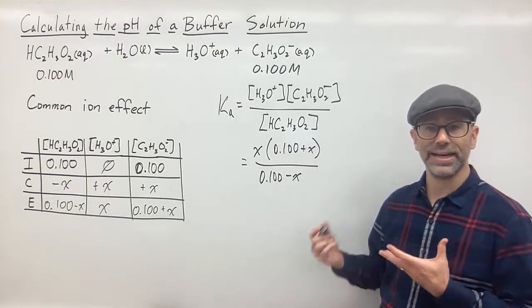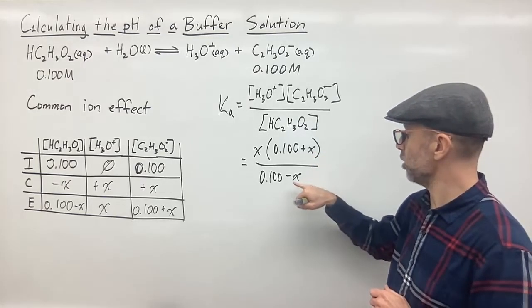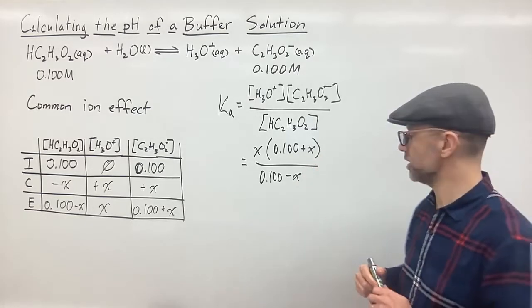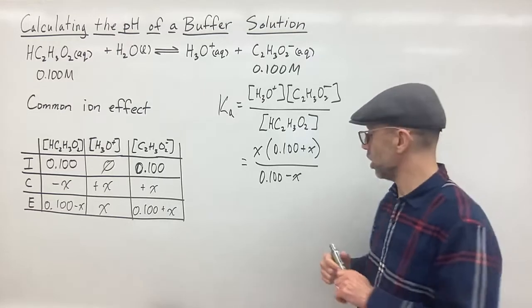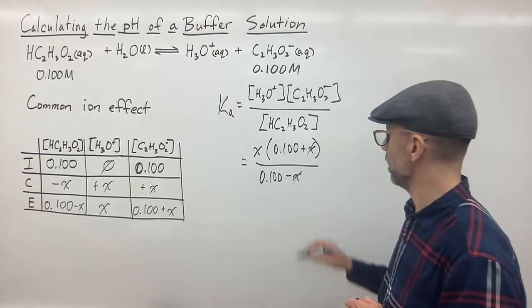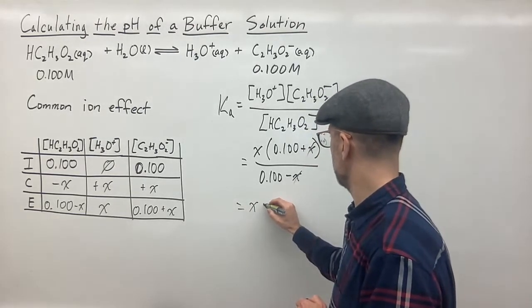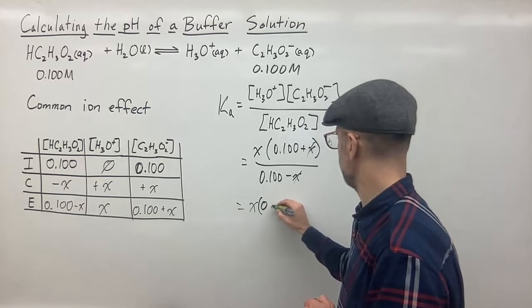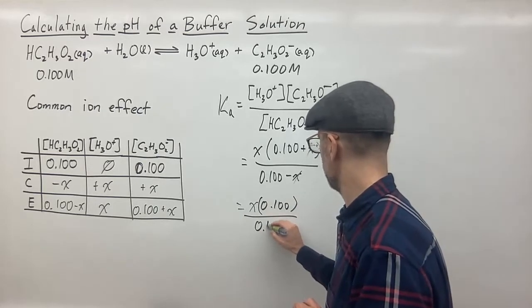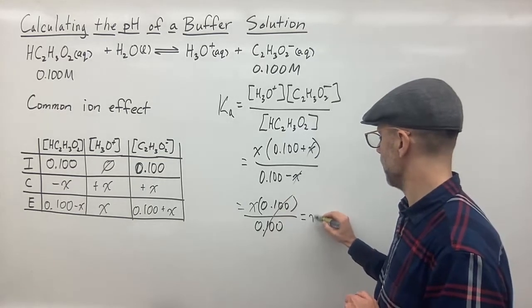And again, we can use the x is small approximation. So we can assume that x is so small that adding or subtracting x from either amount is not going to change the amount significantly. So we can get rid of x. So we get rid of the x there. And then we end up with x times 0.100 over 0.100. And so that's going to cancel out. And that's going to give us x.